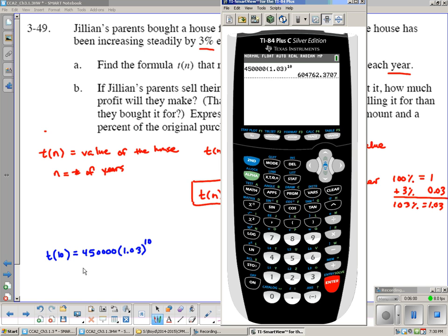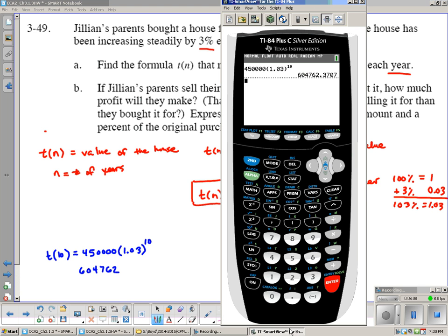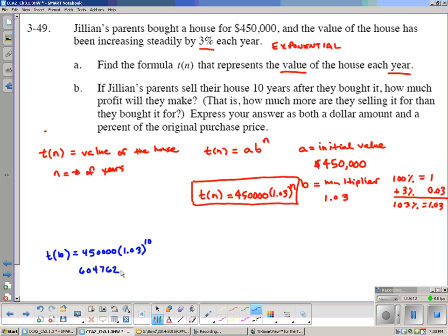So this is the value that they sold it at. If we're trying to figure out the profit that they made, let's take the current value or what they sold it for. This is 10 years into the future from when they purchased it. We have $604,762.37, and we want to subtract their original purchase price. We're going to take away $450,000.